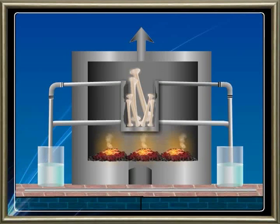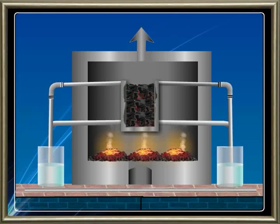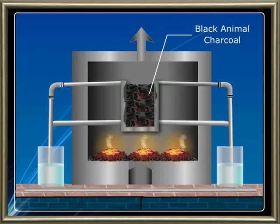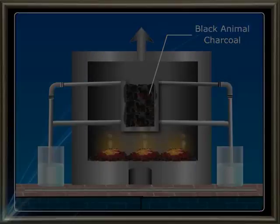As the clean bones are kept in the retort and heated in the absence of air, we will notice a black animal charcoal left in the retort. The black animal charcoal consists of carbon and calcium phosphate.